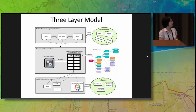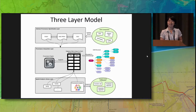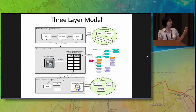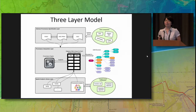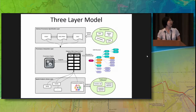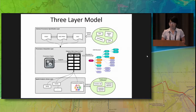The bottom layer is the library layer, which has a lot of software packages to support spatial analysis — for example, PyCell, Giada, and SP-REG. We hope that we can build a crosswalk between these different software packages such that the result generated from one package can be automatically validated by another through the definition of the provenance model.